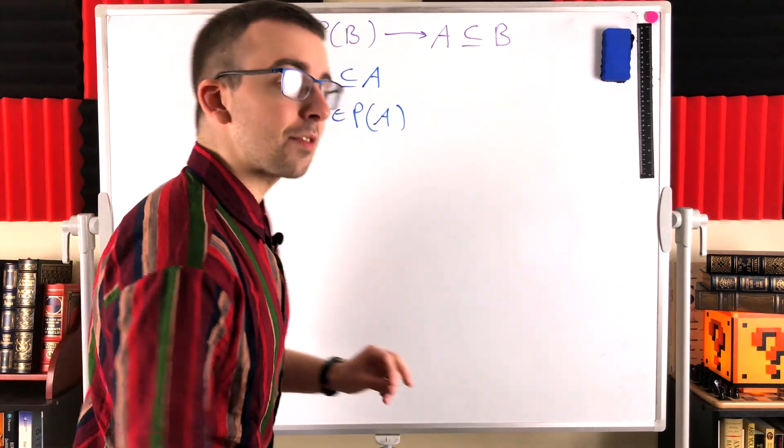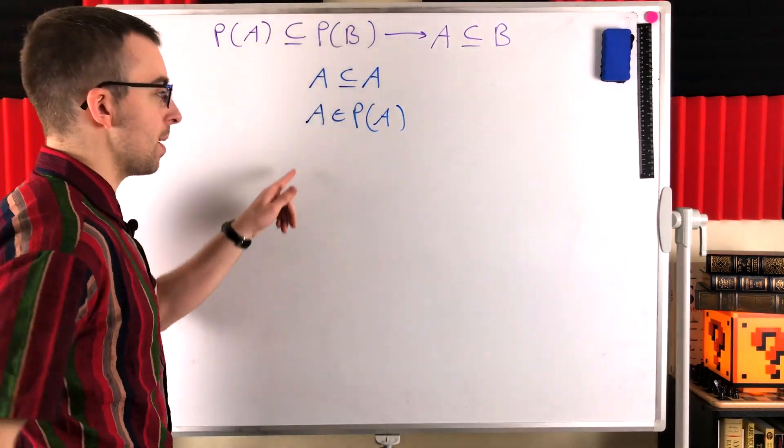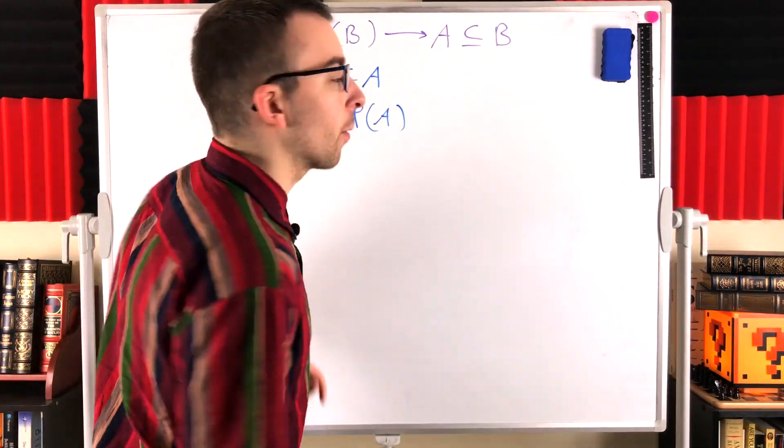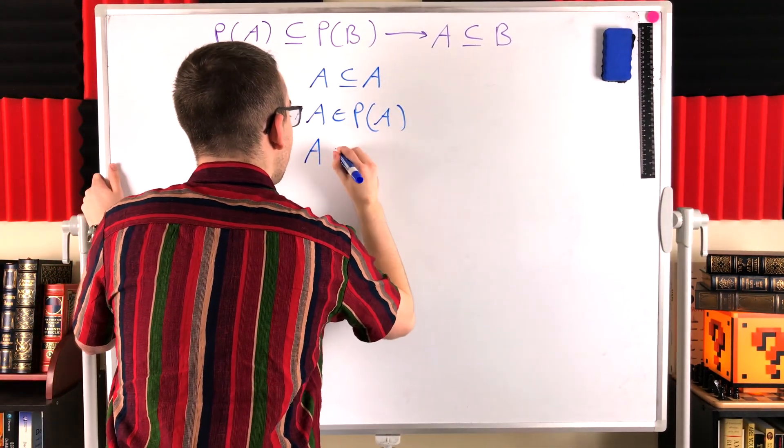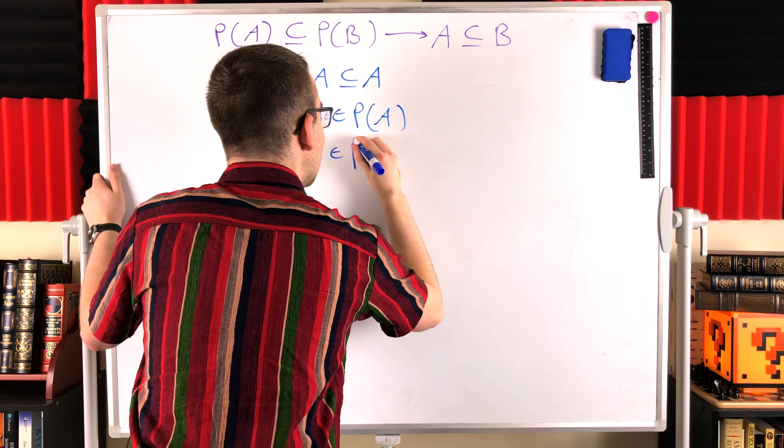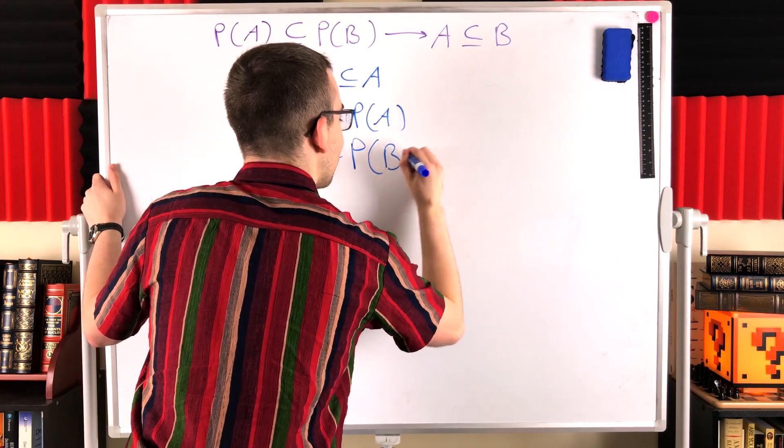Well, since the power set of A is a subset of the power set of B, every element of the power set of A has to be an element of the power set of B. So this implies that the set A is an element of the power set of B.